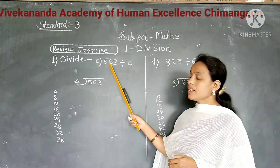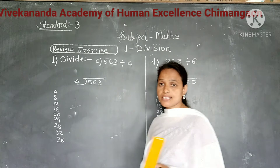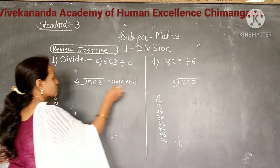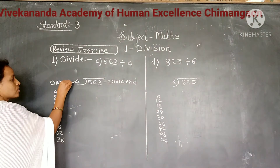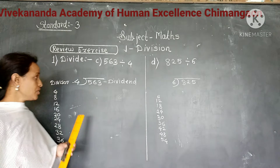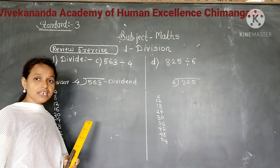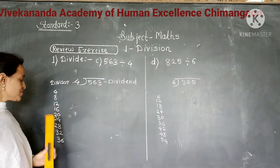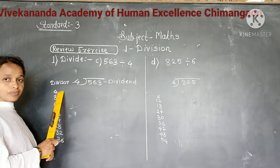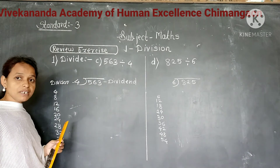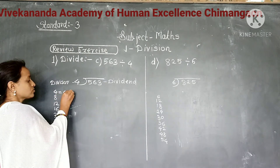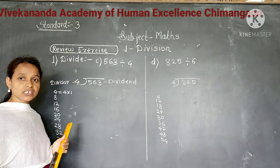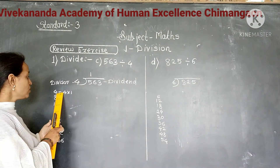Example C: divide 563 by 4. Here 563 is the dividend. We write the dividend and divisor in the correct places and write the table of 4. Now we start division from the hundreds place. The digit in the hundreds place is 5. So we divide 5 by 4. But 5 is not in the multiplication table of 4. So less than 5 is 4, which comes in the first place of the multiplication table of 4. So we divide 5 by 4, it gives 1 as a quotient. Write 1 as a quotient and write product 4 below 5.